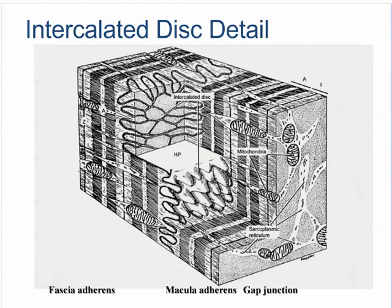A review of the intercalated disc: the intercalated disc is a compound cell junction comprised of three junctions distributed over a large surface area. That surface area has a horizontal and vertical plane which defines the distribution and function of the cell junctions. The vertical planes contain the desmosomes and fascia adherens because this is where the tensional force is greatest. The horizontal plane contains the gap junctions and aids in the electronic coupling of the cardiac myocytes.